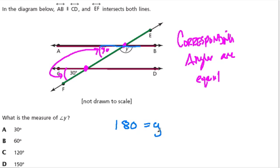So the mystery angle Y plus 30 has to give us 180, and Y has to equal 150, because 150 plus 30 is 180. So the answer is D, 150 degrees.